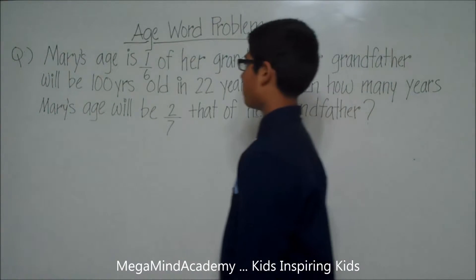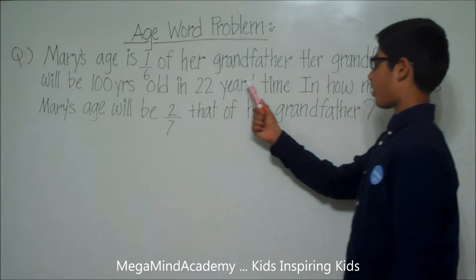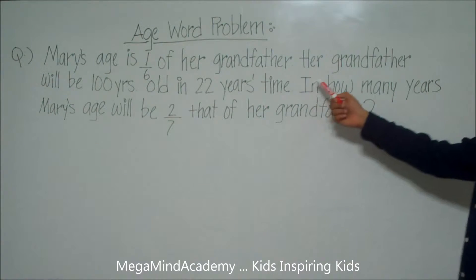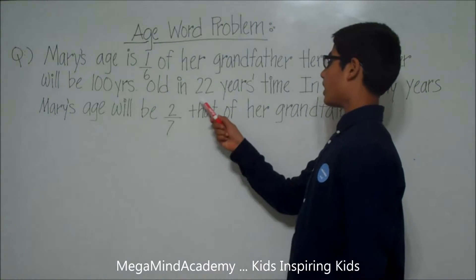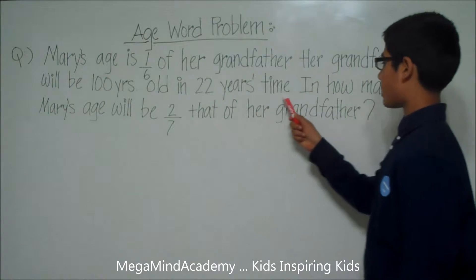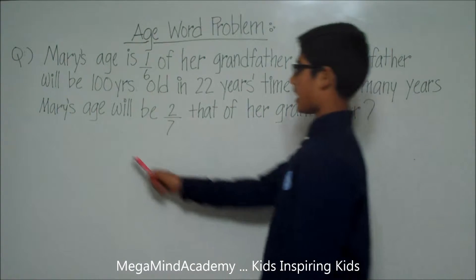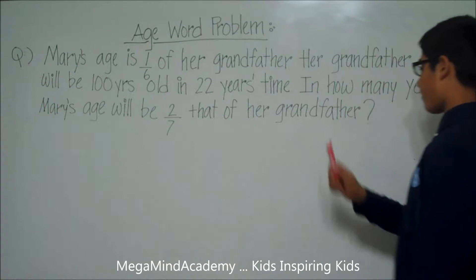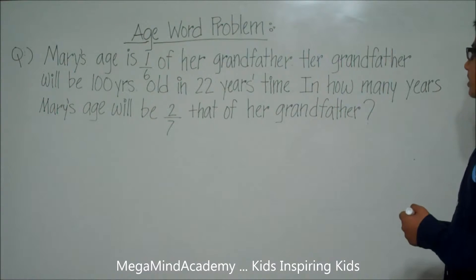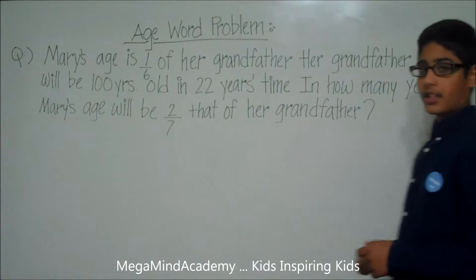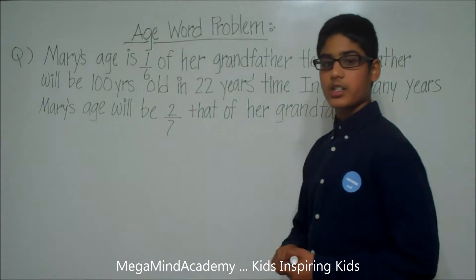Let's say we have a problem like: Mary's age is one-sixth of her grandfather's. Her grandfather will be one hundred years old in twenty-two years' time. In how many years will Mary's age be two-sevenths that of her grandfather's?